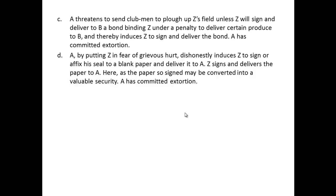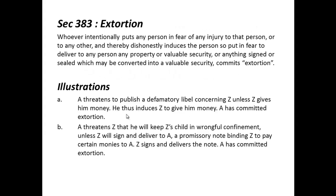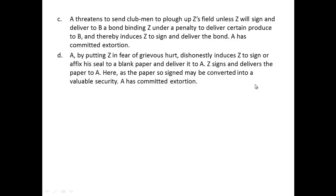Illustration D: Person A threatens to cause grievous hurt to Z, saying that if Z does not give a blank signed paper, there will be serious trouble. This blank paper is simply a paper signed by Z on which someone can later write something to convert it into a valuable security — for example, writing a property sale deed. This fits the definition's phrase 'anything signed or sealed which may be converted into a valuable security.' If Z delivers the blank signed paper, person A has committed extortion.